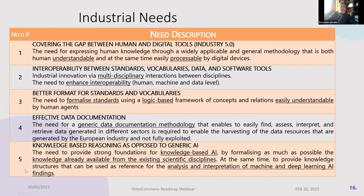The needs we address in this chapter include: covering the gap between human and digital tools in the context of Industry 5.0; achieving interoperability between standards, vocabulary, data, and software tools via a multidisciplinary approach; providing a better format for standards and vocabularies — formalizing standards using a logic-based framework understandable by both human agents and machines; and effective data documentation enabling interoperability. We also want to provide grounds for knowledge-based reasoning as opposed to generic AI, because one of the drawbacks of AI is the need to interpret findings.